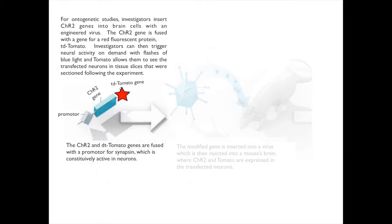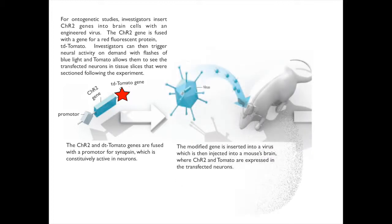Here, the channel rhodopsin 2 and tomato genes are fused with a promoter for synapsin, which is constitutively active in neurons. The modified gene is inserted into a virus, which is then injected into a mouse's brain, where channel rhodopsin 2 and tomato are expressed in the transfected neurons.